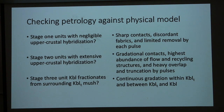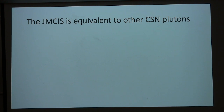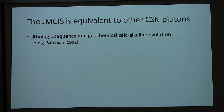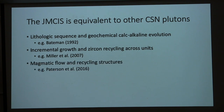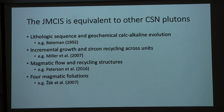Let's zoom out and think about the Jackman in the central Sierra Nevada context. The transition from quartz diorite to granite is a typical pattern in the central Sierra Nevada — Bateman's 1992 paper is referred to as the Bible of central Sierra Nevada plutonism, and this calc-alkaline trend and lithologic sequence are typical. The zircon record shows incremental growth and zircon recycling across contacts, also typical and recently documented in the neighboring Tuolumne. The same applies to magmatic flow and recycling structures, and the four magmatic foliations are also present in the Tuolumne, suggesting the Jackman reflects a typical central Sierra Nevada strain history. The only thing that's different about this system is its weird map pattern.